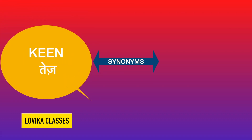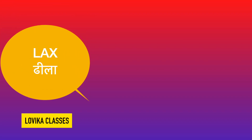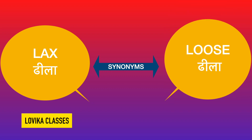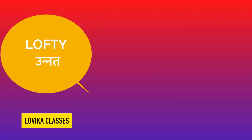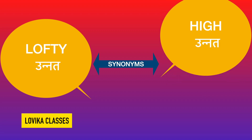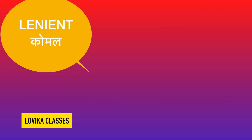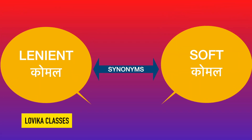Keen means tej, yaani tikhha — its synonym is sharp, also meaning tej. Lax means dheela — its synonym is loose, also meaning dheela. Lofty means unnat — its synonym is high. Lenient means komal — its synonym is soft.